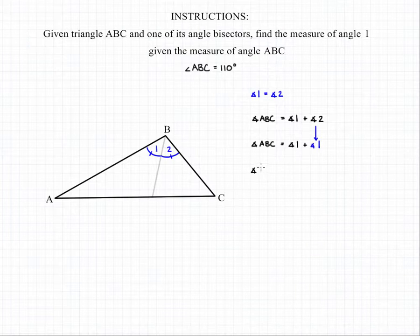From here we'll have angle ABC being equal to two times angle 1, and now we can plug in what we know from our problem. So 110 degrees is going to equal 2 times angle 1.